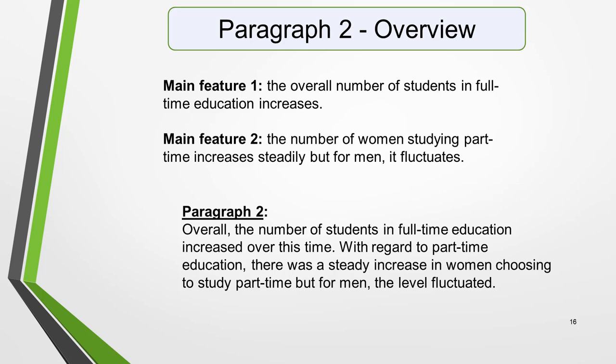This is where you write about the general trends. Here are the ones we picked out earlier. Main Feature 1: the overall number of students in full-time education increases. Main Feature 2: the number of women studying part-time increases steadily, but for men it fluctuates. Now form these ideas into two or three sentences, with a total of around 40 words. State the information simply, using synonyms where possible. No elaborate vocabulary or grammar and structure is required.